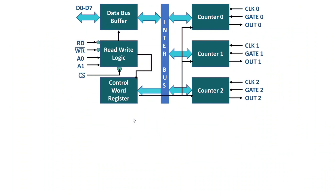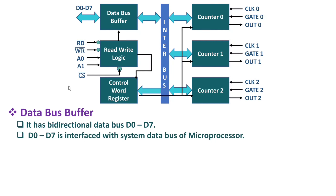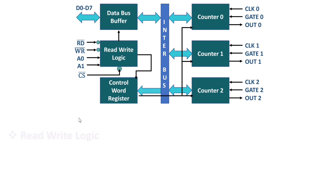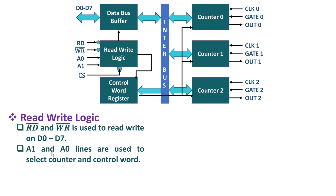I will explain each of these blocks in detail. The data bus buffer, D0 to D7, is a bidirectional data bus connected with the system bus of the microprocessor to exchange data with this IC. With the read/write logic, we have read bar, write bar, A0, A1, and chip select. Read and write bar are used to read and write data on D0 to D7. A1 and A0 are used to select a counter as well as the control word. Chip select is an active low signal used to select the 8254 chip.